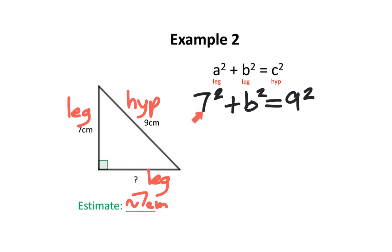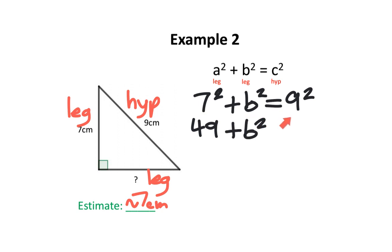7 to the power of 2 is the same thing as 7 times 7, which is equal to 49. B to the power of 2 — we can't really do anything with that, so we're going to leave it the same. 9 to the power of 2 is the same thing as 9 times 9, which is equal to 81.